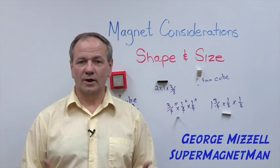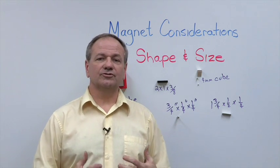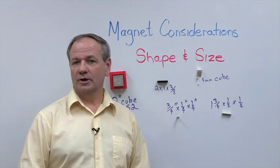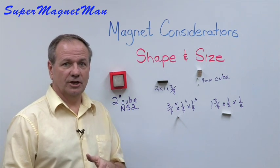Now we want to take a minute and look at our rectangular shapes, which also include cubes, and see what the differences are between them from a magnetic standpoint and how it might affect your application.